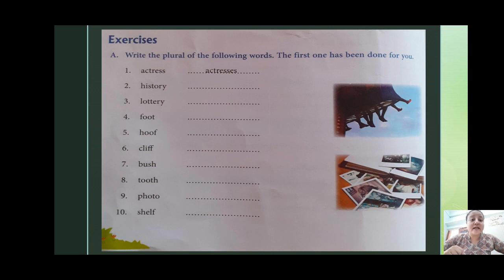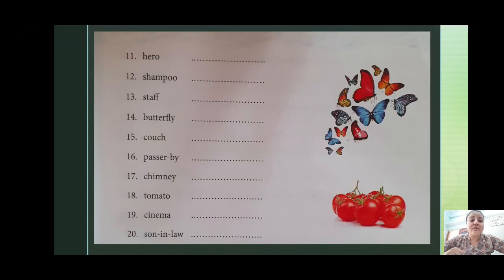For example: actress → actresses, history → histories, lottery → lotteries, foot → feet, hoof → hoofs. The remaining words to complete are: cliff, bush, tooth, photo, shelf, hero, shampoo, staff, butterfly, couch, passerby, chimney, tomato, cinema, son-in-law.